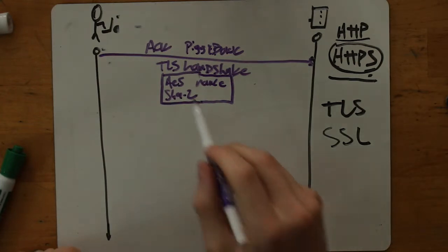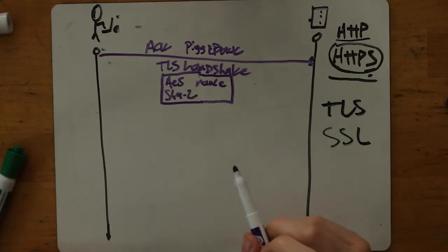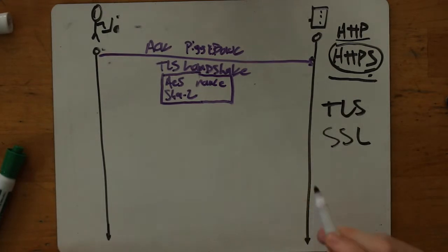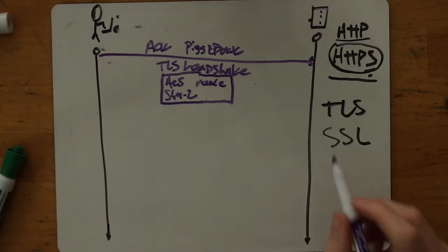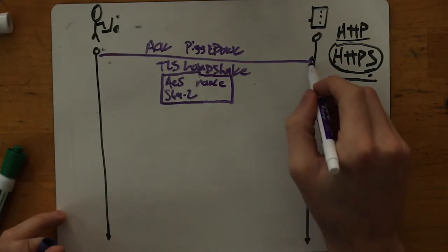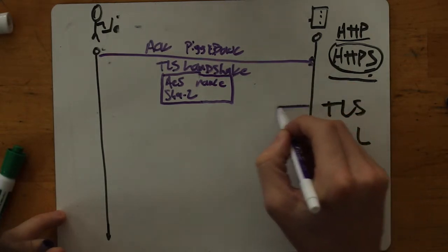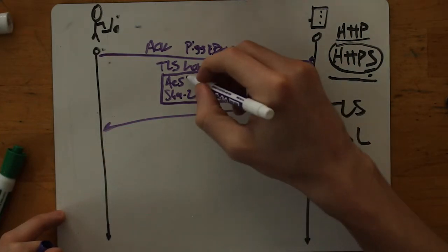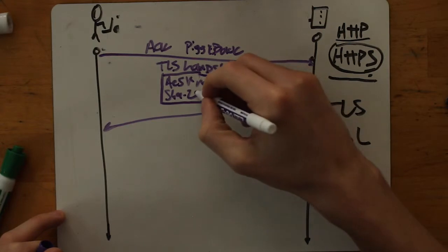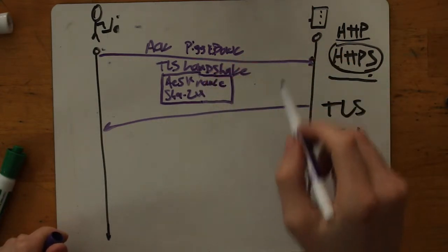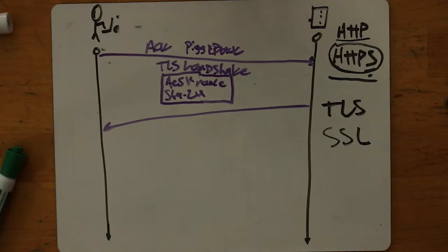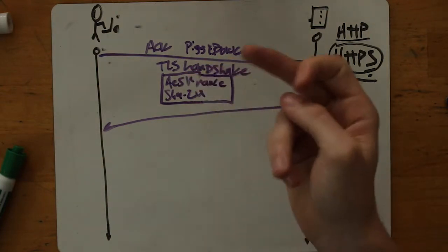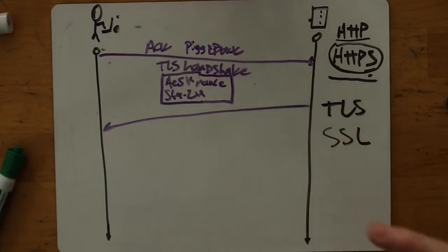Google sends back a response saying: you said you could use AES and Blowfish — I chose AES. You said you could use SHA1 or SHA2 — I chose SHA2. It sends back a chosen Cipher Suite as well. These first two messages are called the Cipher Suite negotiation, and they include crucially picking a symmetric cipher as well as a cryptographic hash function.